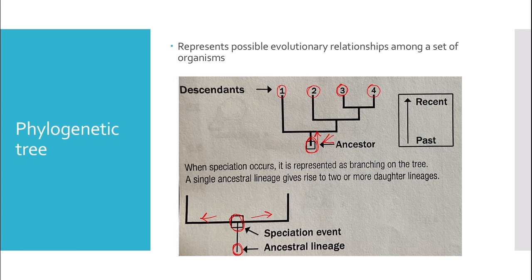There's another similar graph called a cladogram — it's basically the same idea but presented as a straight line with lines going down. The common ancestor is at the base, and breaks in the line indicate speciation events, showing which species are more closely related to each other than to the common ancestor. I hope this has helped, and good luck.